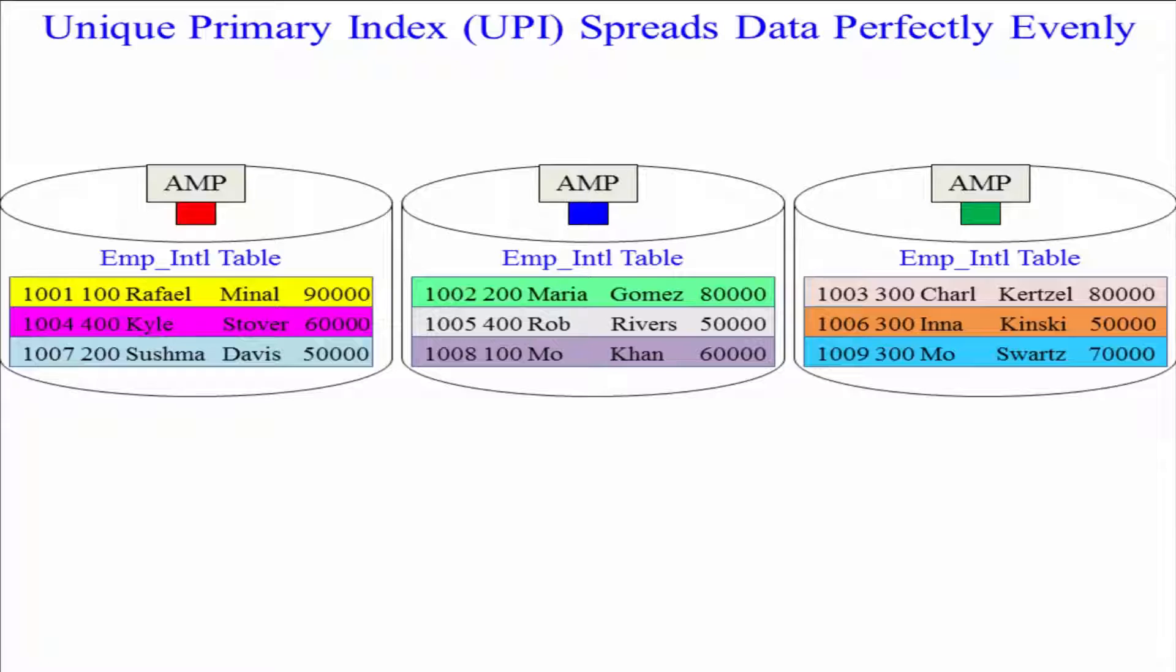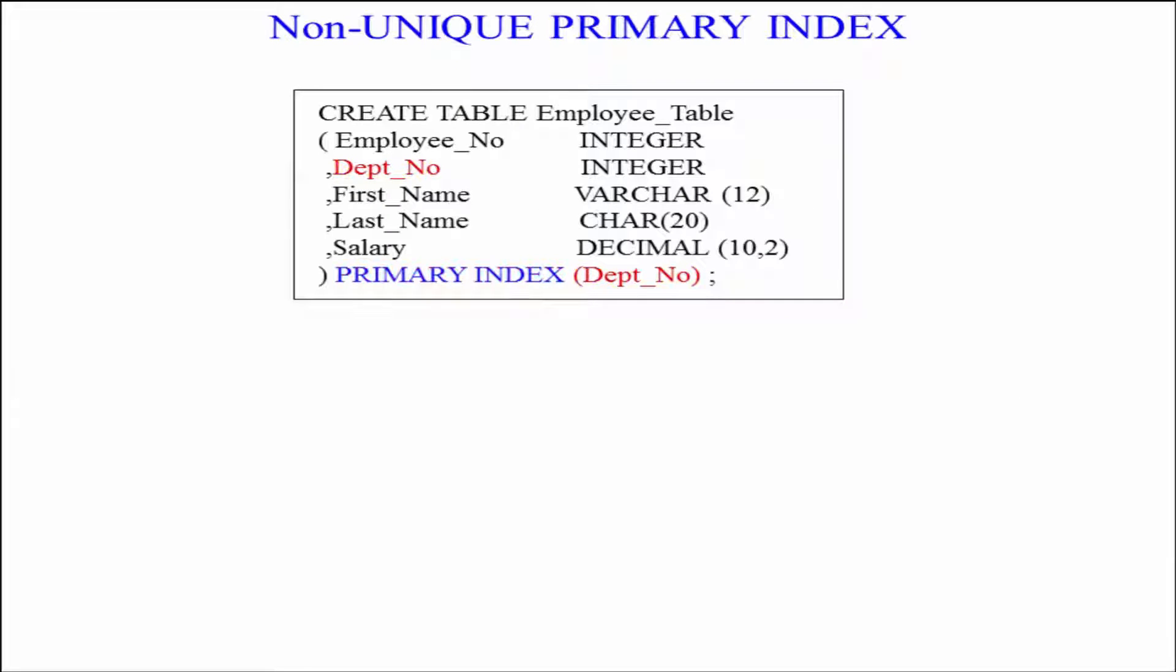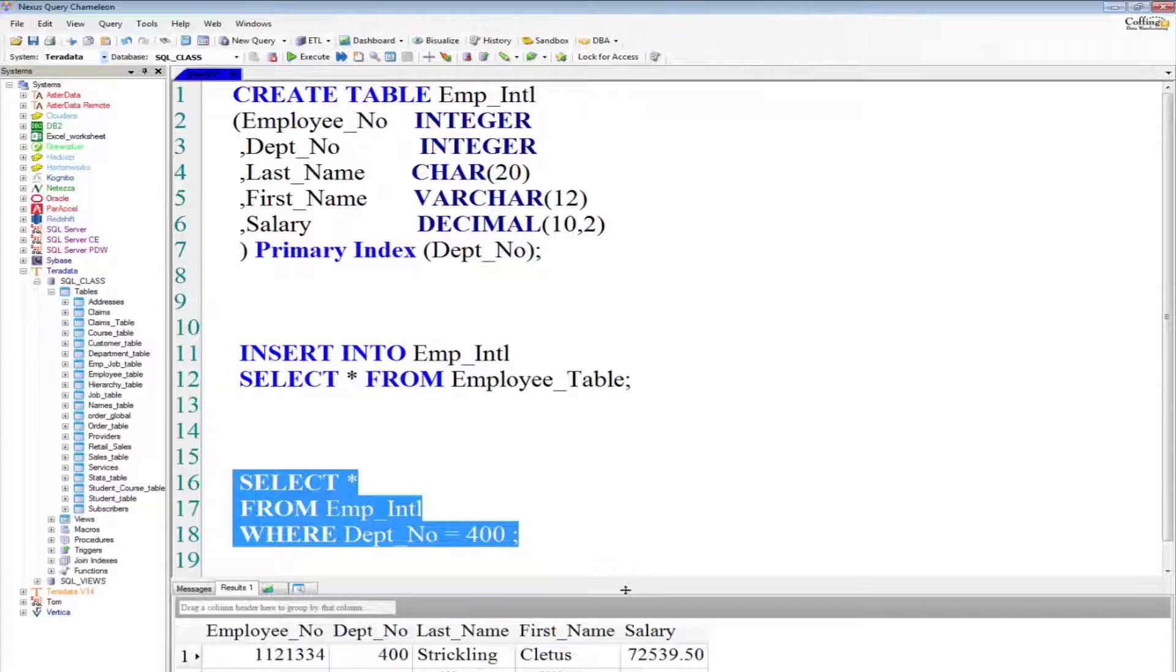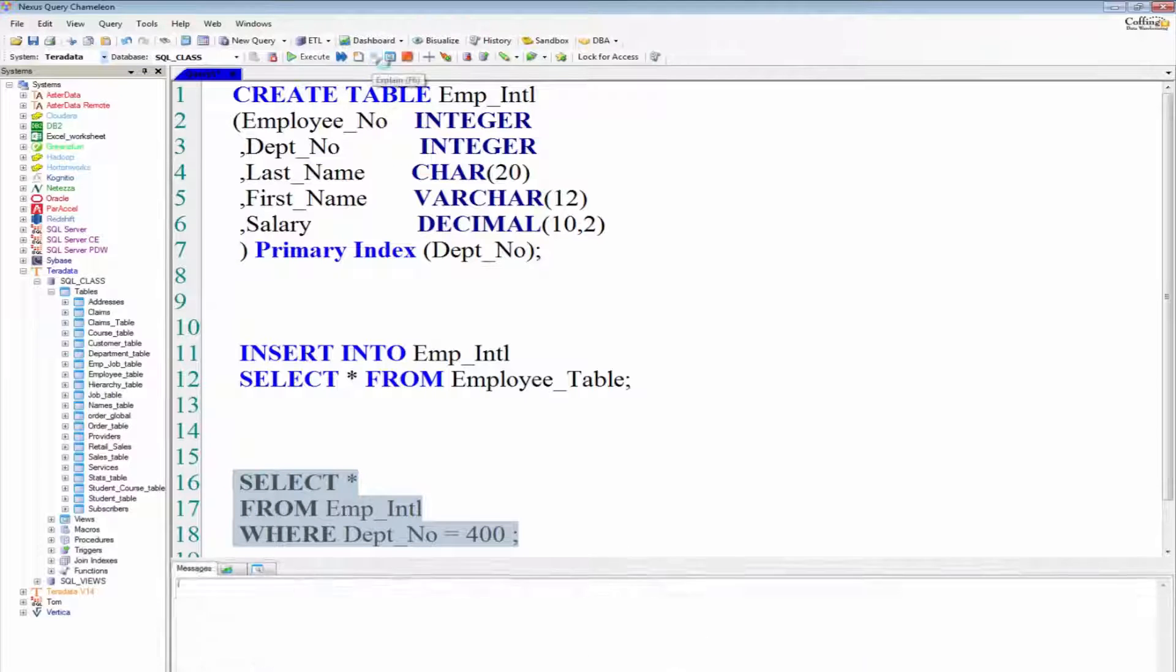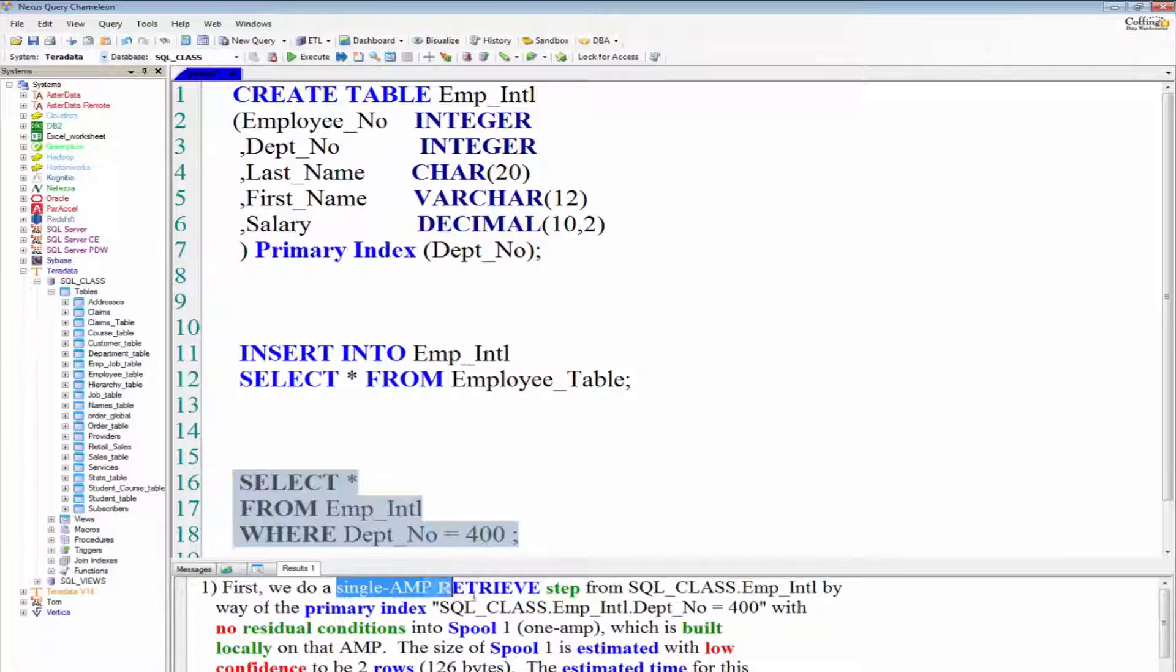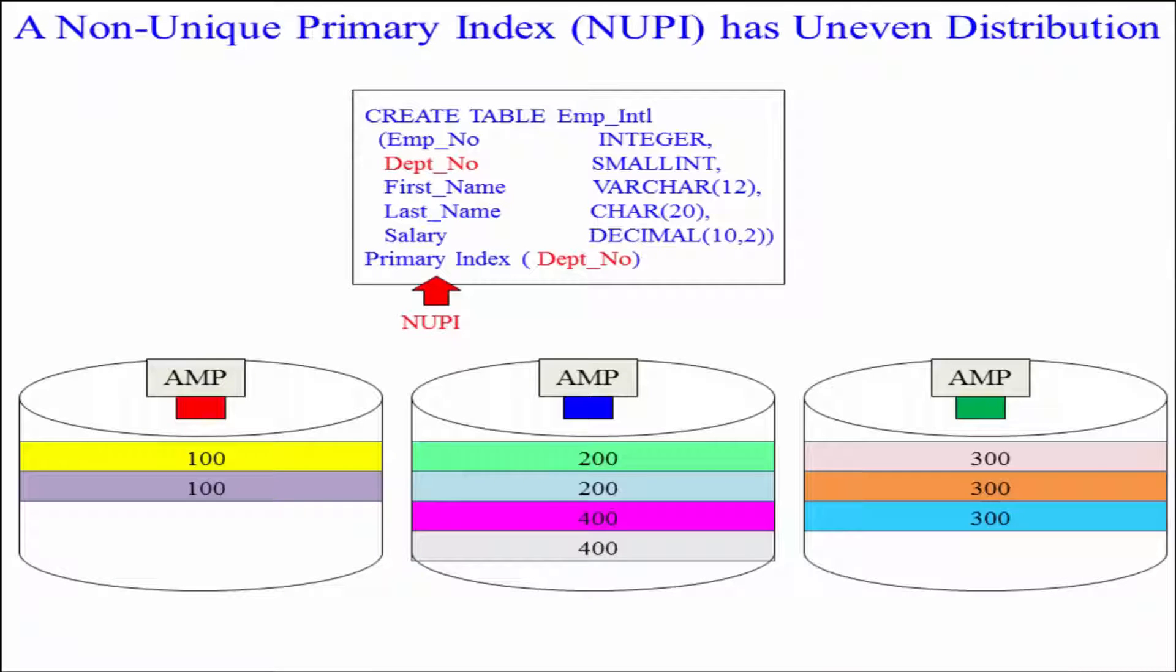Our second example here is going to have a non-unique primary index. We've chosen this because the users are querying on that column the most or we're joining it to other tables based on that column. We'll learn more about that a little bit later. But the data is not going to be distributed evenly. Hopefully it'll be relatively evenly, but that's what we're going to have each and every time.